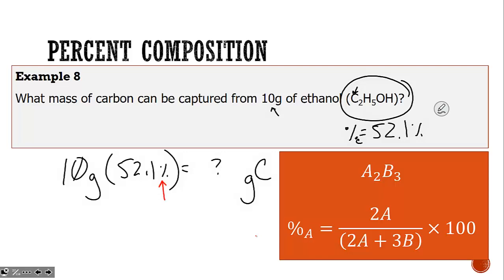The percent symbol is a mathematical operator. Percent is actually two words meaning per centi. We don't use 52 mathematically, we use 52 for each 100. When you put this in your calculator, please use 10 times 0.52 to find that you could extract 5.21 grams of carbon from your 10 gram sample of ethanol.